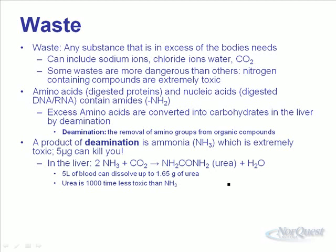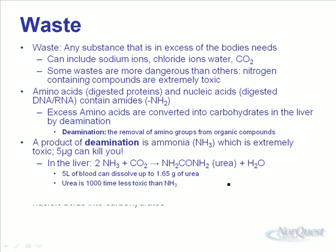Five micrograms of ammonia — about five millionths of a gram — in your blood can kill you. When this happens, your liver deals with the ammonia quite quickly. It reacts with carbon dioxide, forming urea. Urea is much less toxic. Blood can dissolve 1.65 grams of urea, and urea is a thousand times less toxic than ammonia, so our blood can handle much more urea than ammonia.